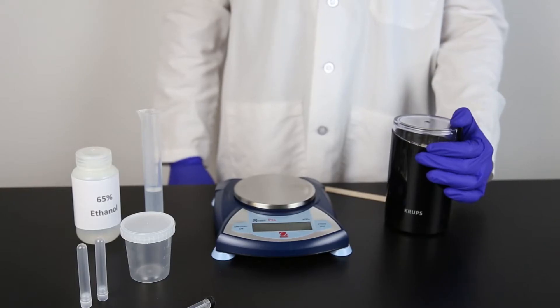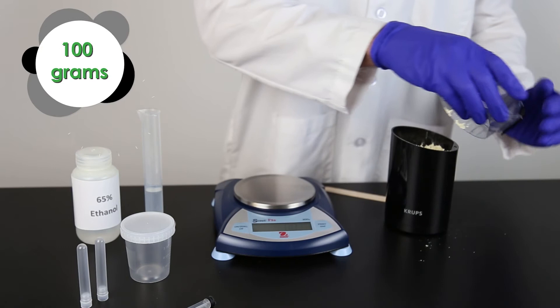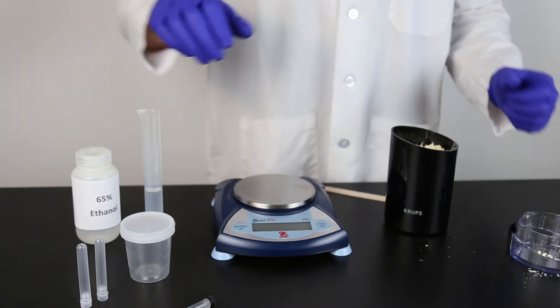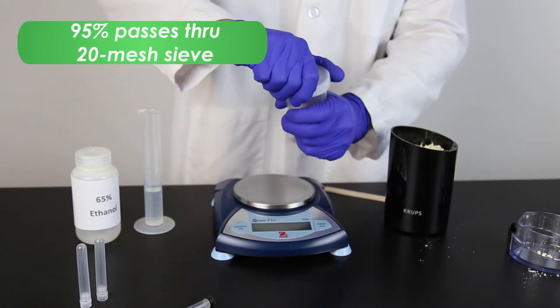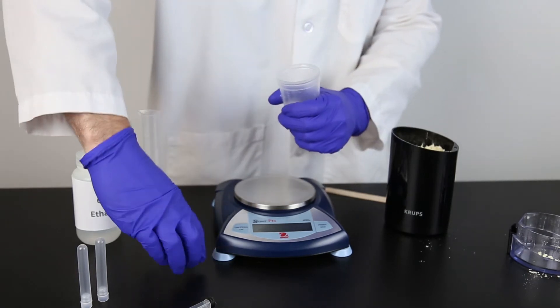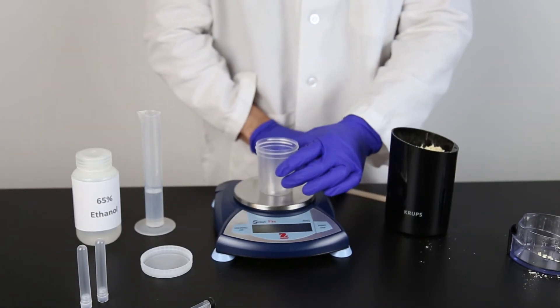Obtain a representative sample by grinding a minimum of 100 grams of sample so that at least 95% of the ground material passes through a 20 mesh sieve. The particle size should be about the same as espresso.